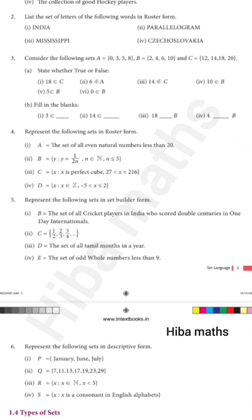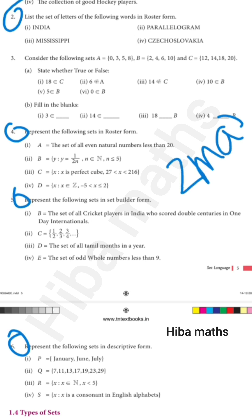Exercise 1.1: List the elements of the following words in Roster form. The second, fourth, fifth, and sixth questions are covered here. These are all 2-mark questions.